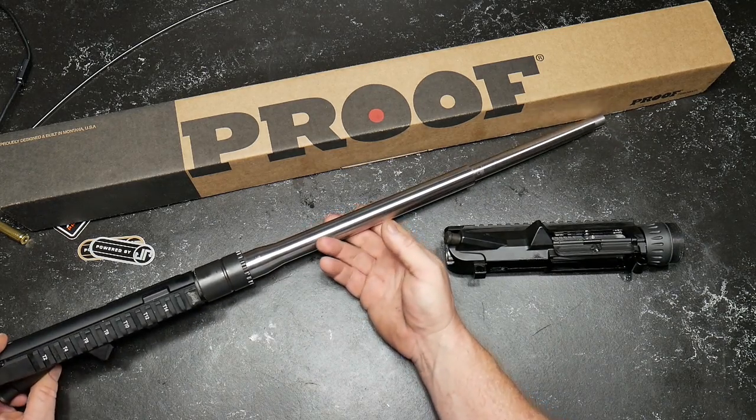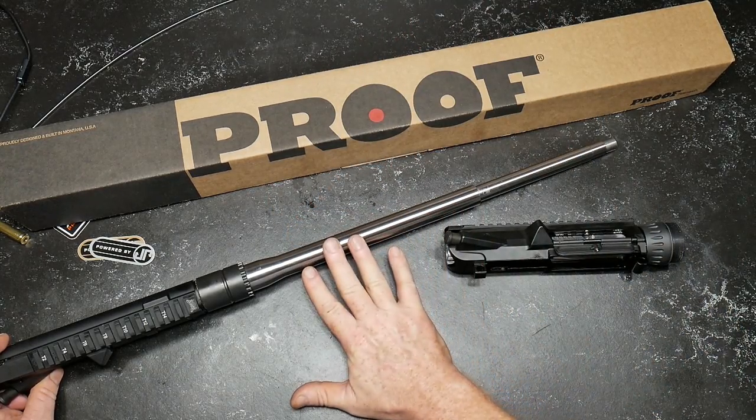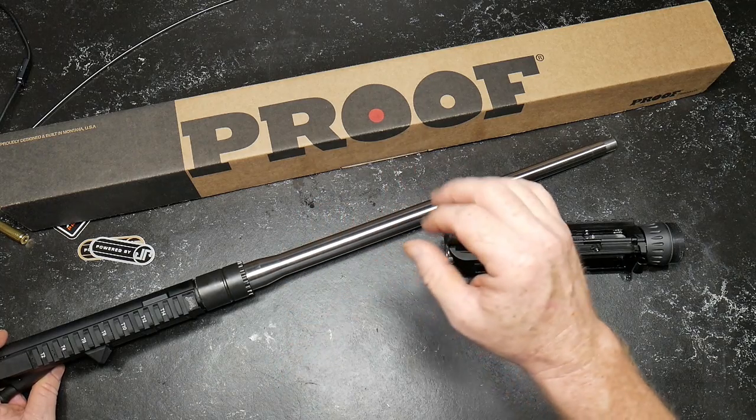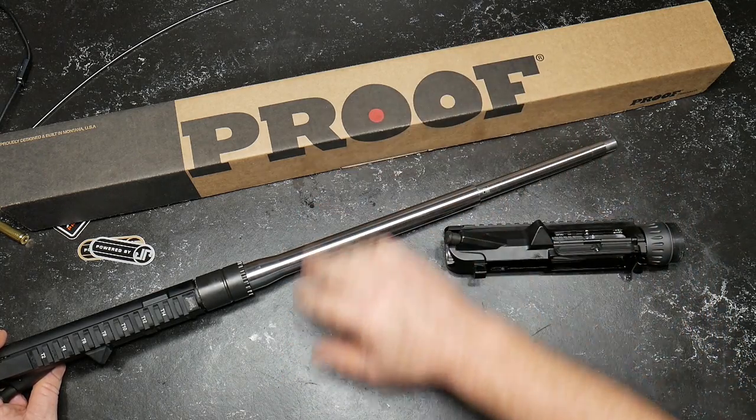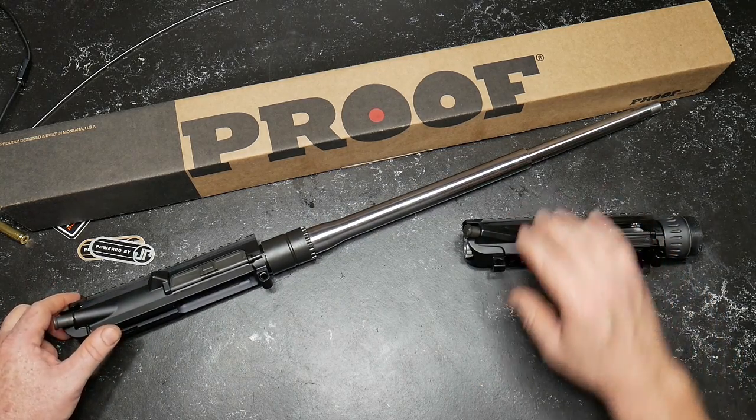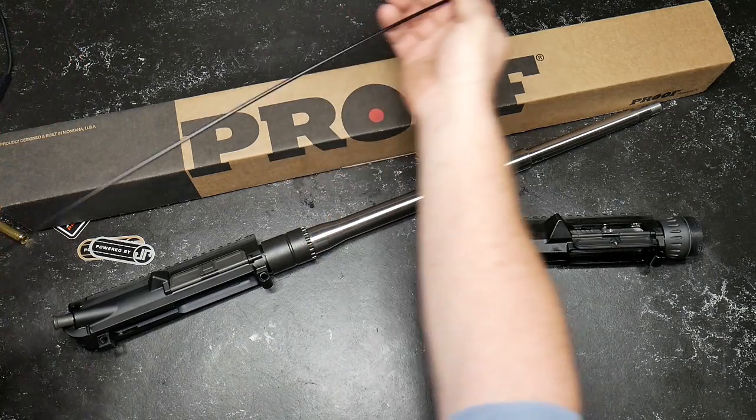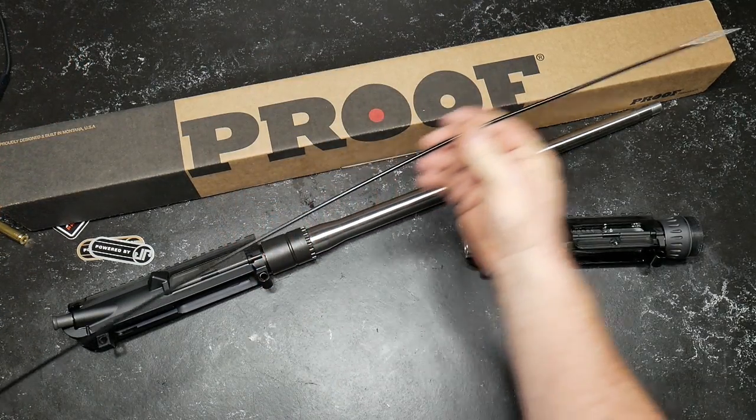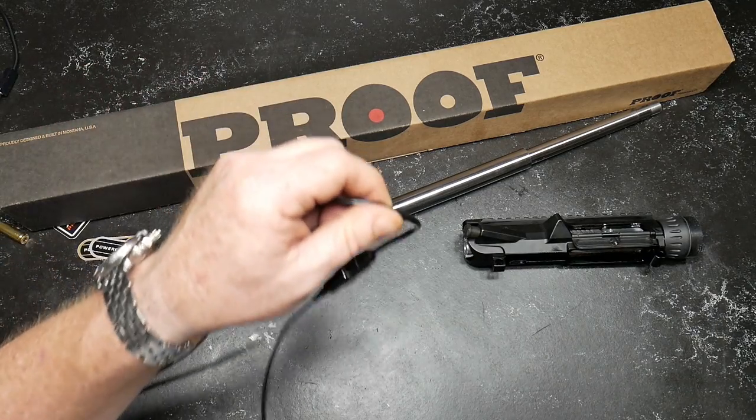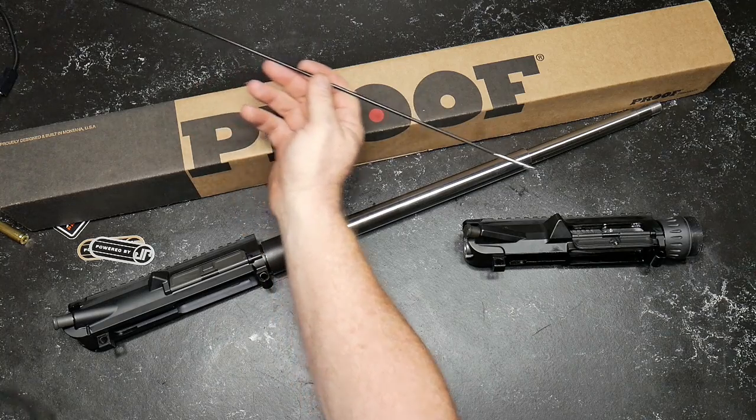Then what I want to do is show you the differences between what a hand-lapped barrel looks like. Now, the last time I did this, we did a comparison between the Bear Creek Arsenal barrel and a Proof barrel. I was using the Endosnake, which did a pretty decent job. But now I have this guy right here. This is an endoscope made by a company called Teslong.